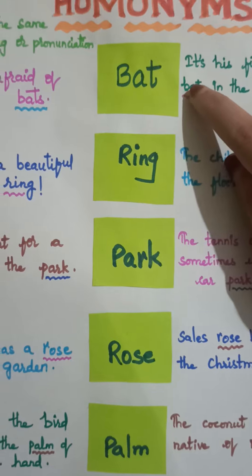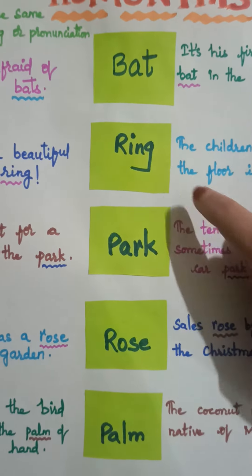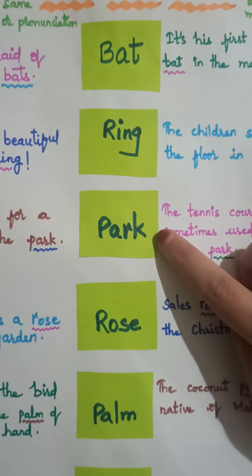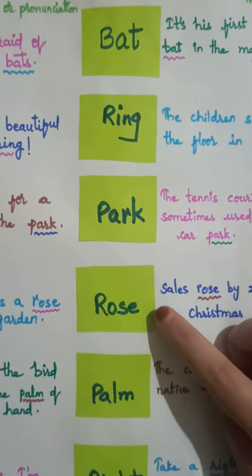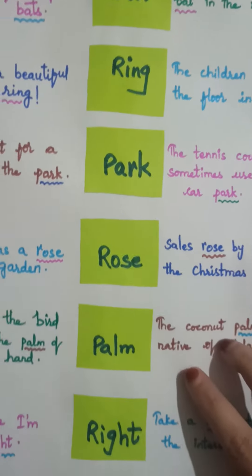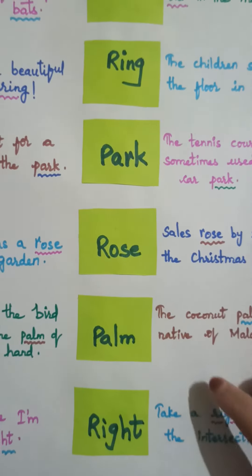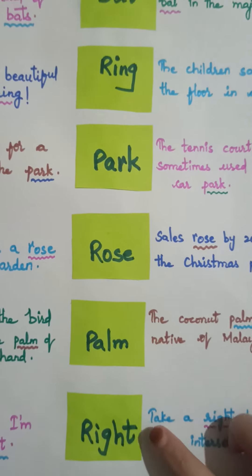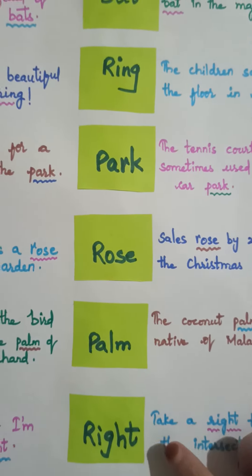A few examples here are bat, ring, park, rose, palm, and right.